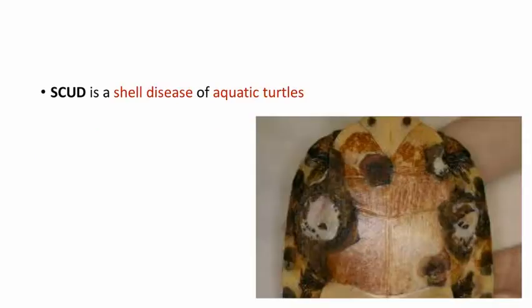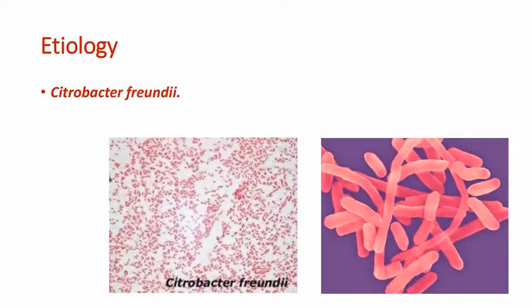First, let's look at septicemic cutaneous ulcerative disease, or SCUD. This is a shell disease in aquatic turtles. Here you can see the lesions. It happens mainly in the ventral part of the body, that is the shell at the ventral part of the turtle.